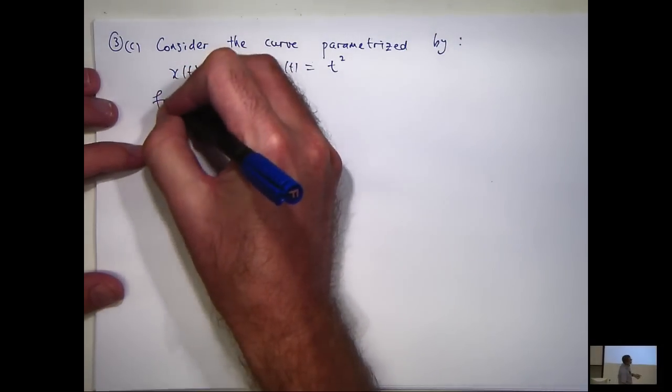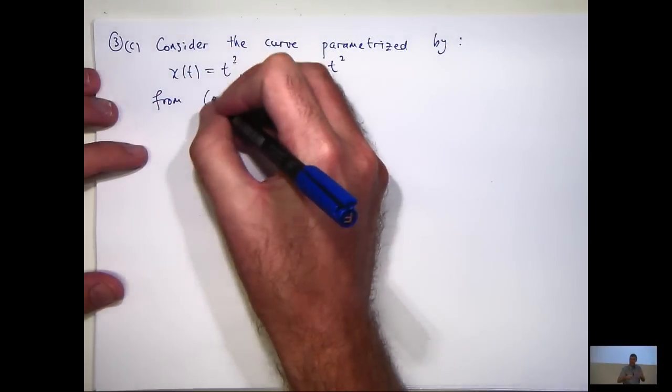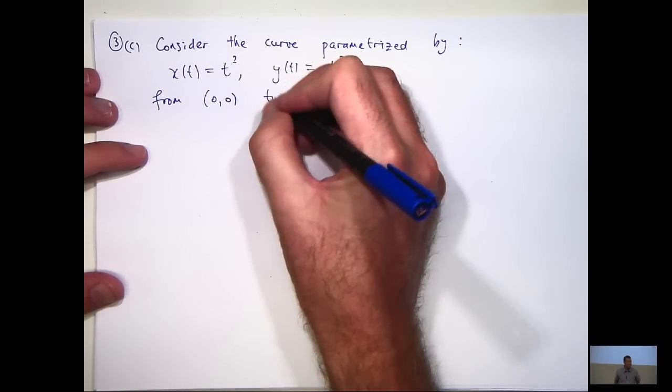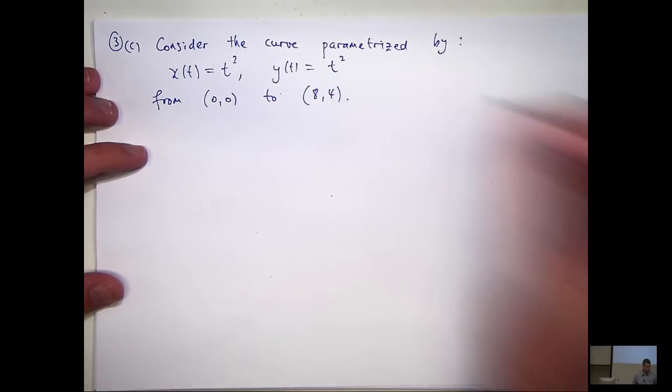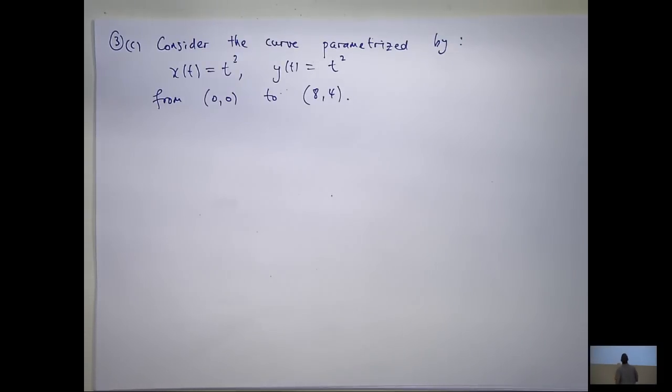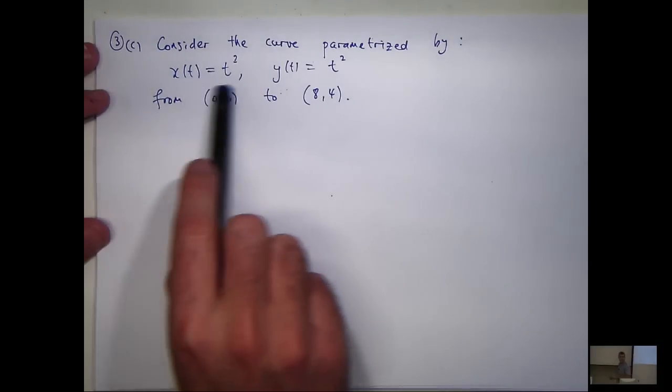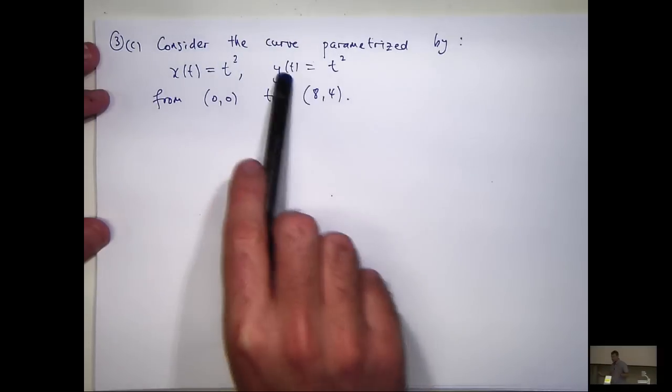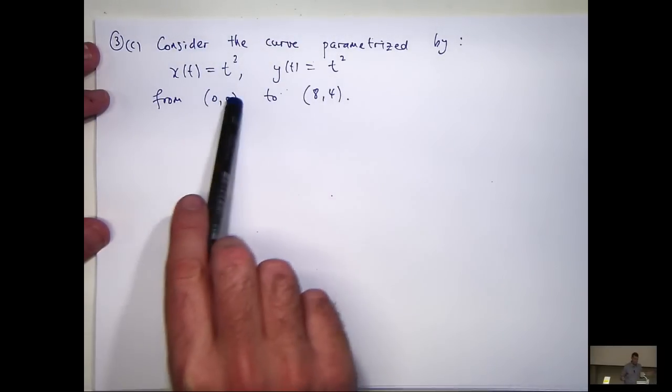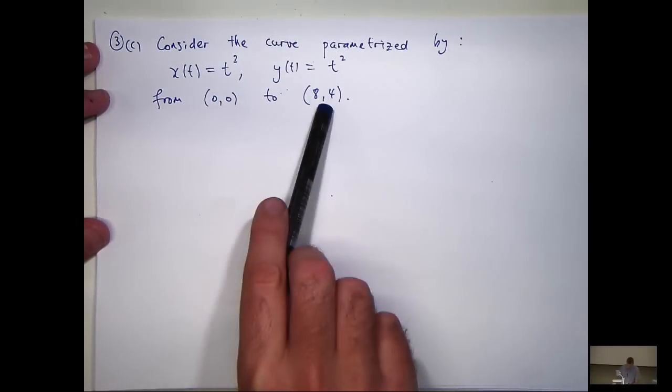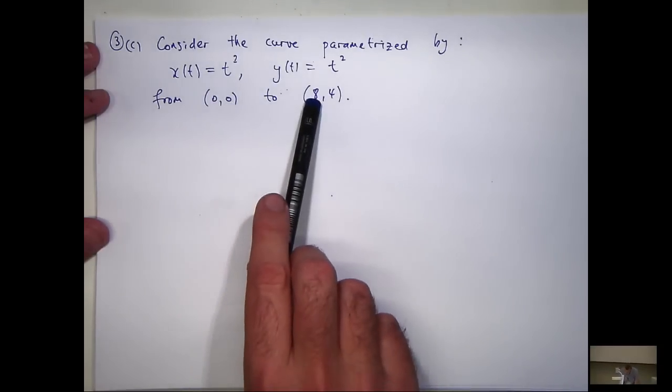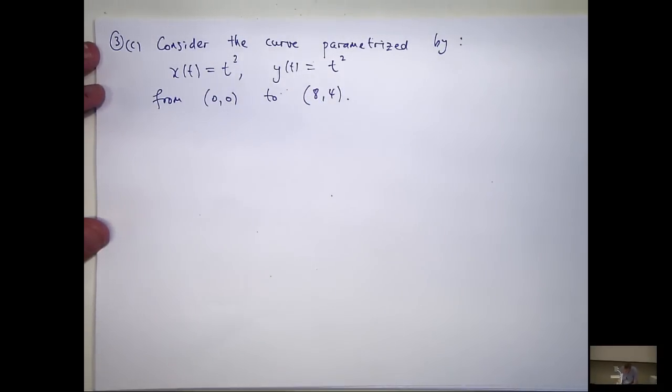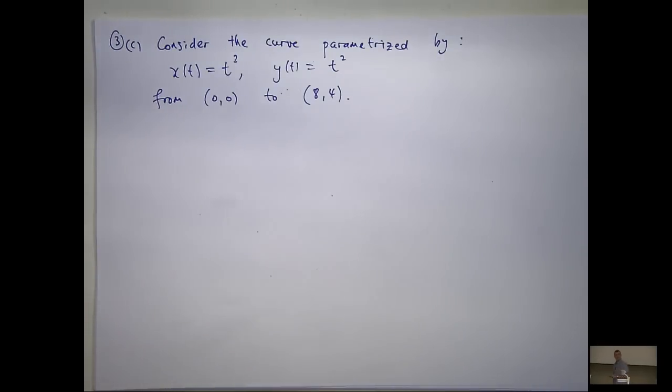So, here is our basic description. So, you can see the x coordinate has... It is a function of t. The y coordinate is a function of t. And we're going from this point to this point in the plane. Okay? So, we're going from x equals 0, y equals 0, to x equals 8, y equals 8. So, that's the curve.